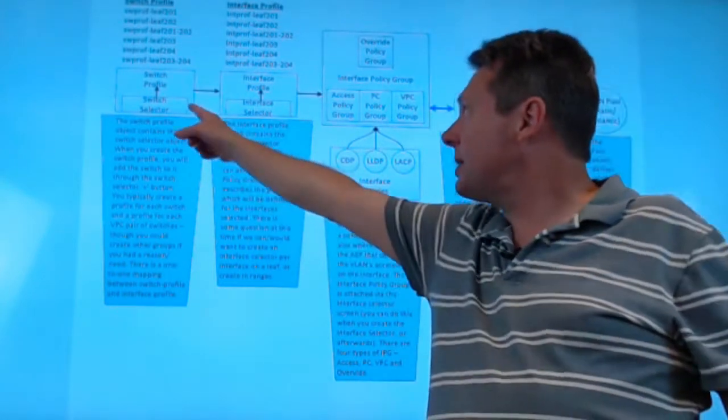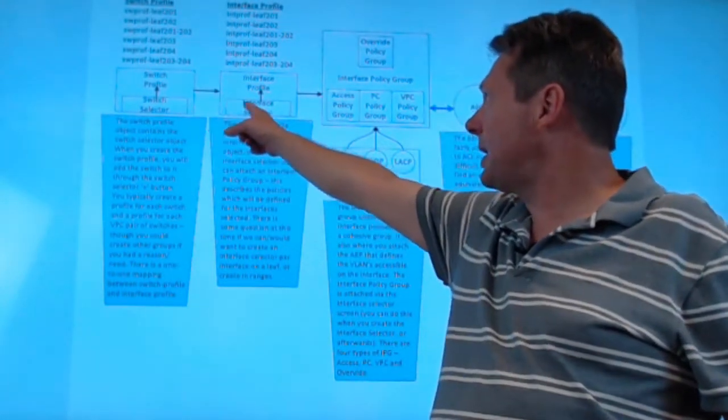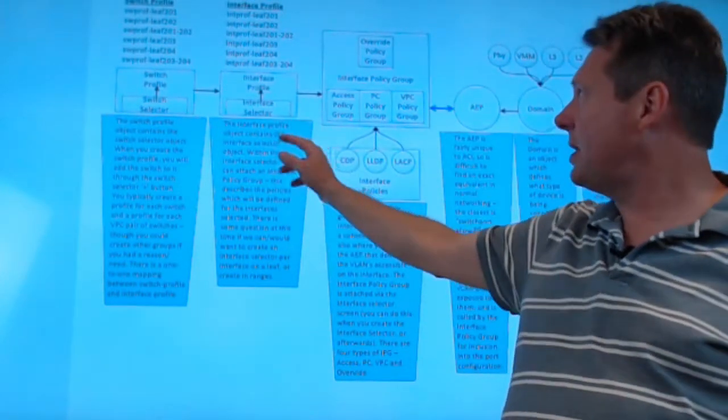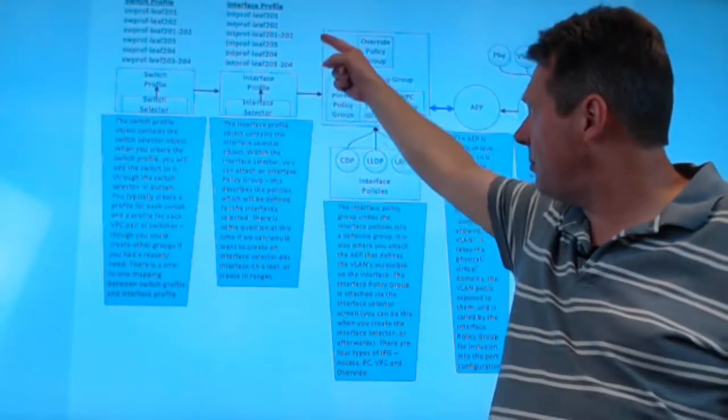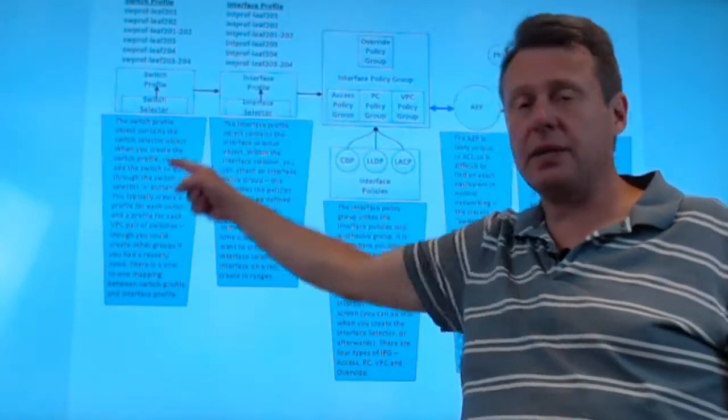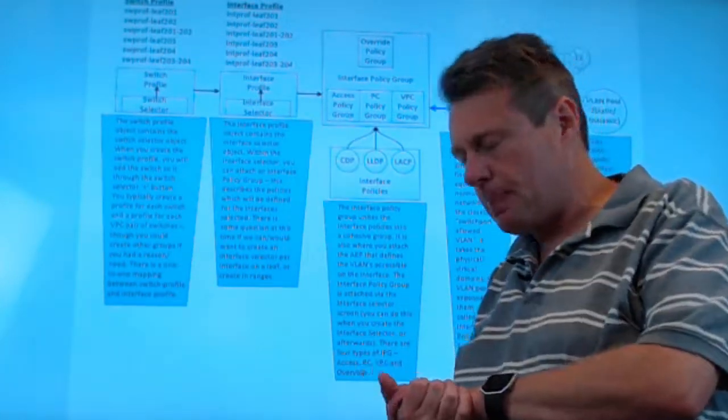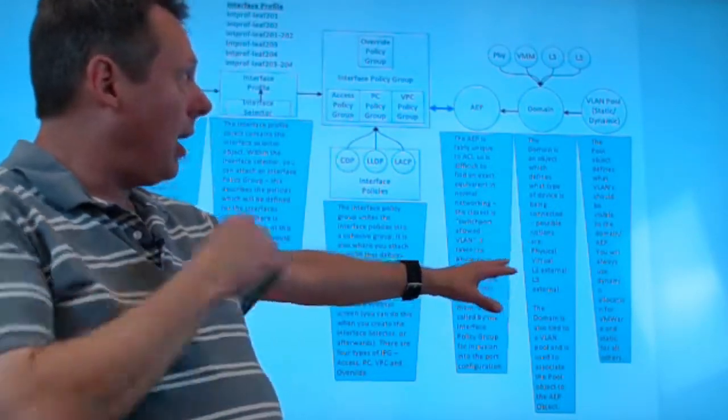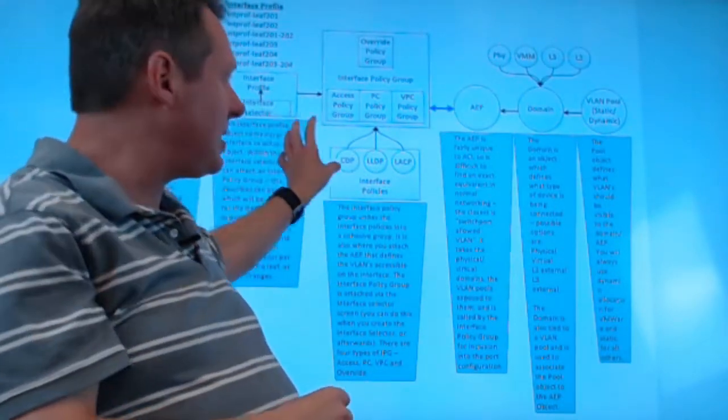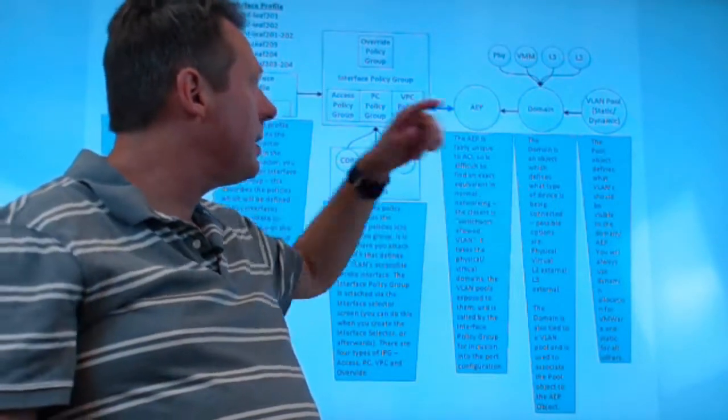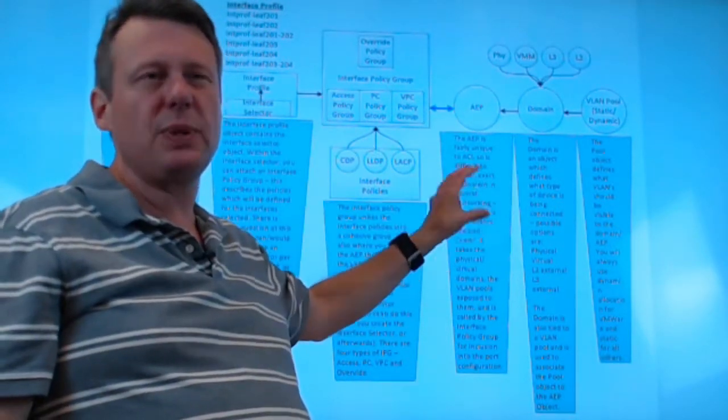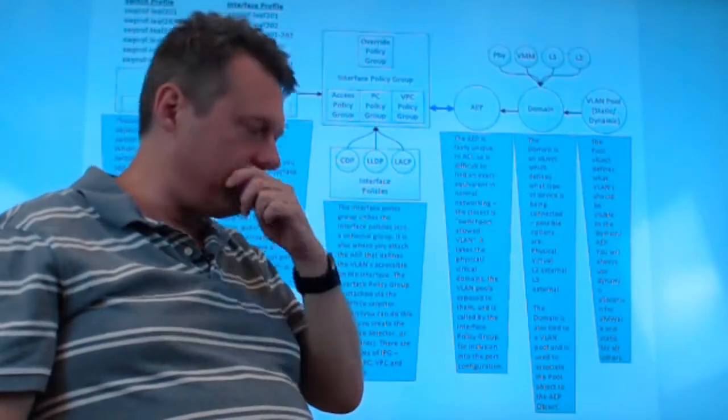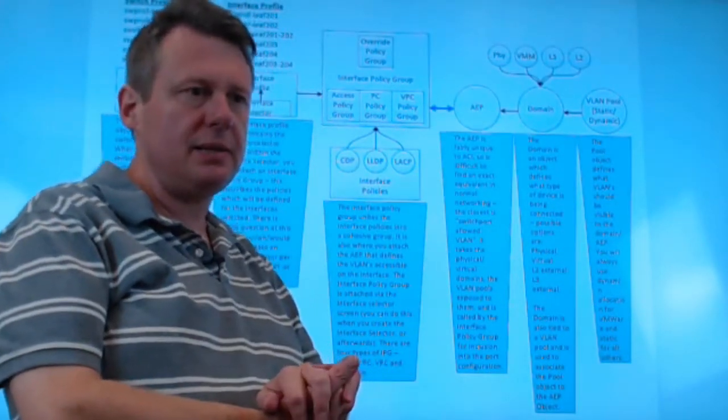Note that your switch profile object gets called into the interface profile. Those are linked. That's how I know what interface on which leaf or which switch. Now we come over here. These are a little more odd. These are fairly simple to understand. These are horrible to understand, but they're a little more odd because we don't really have a very good one-for-one type of concept in NXOS.